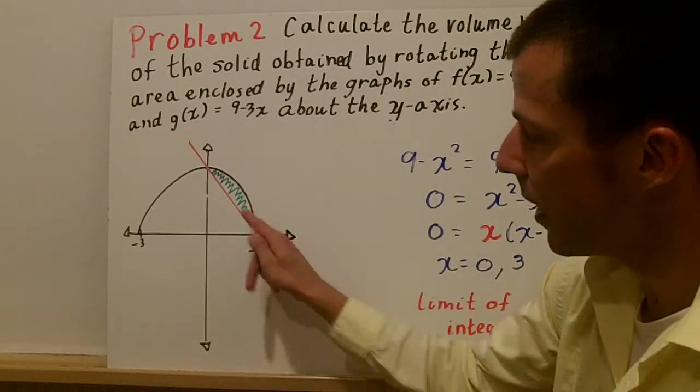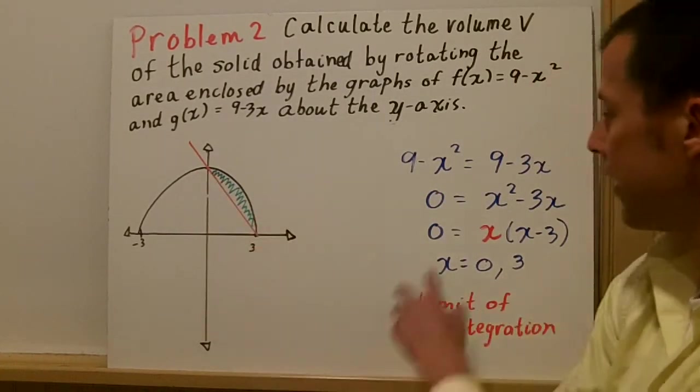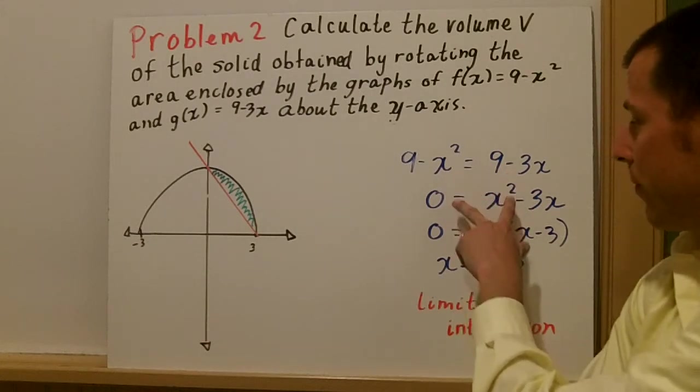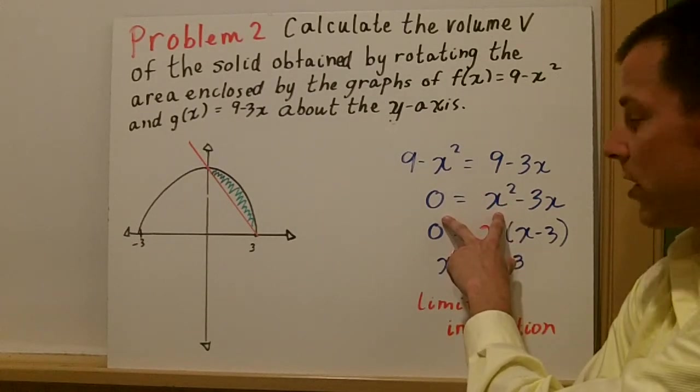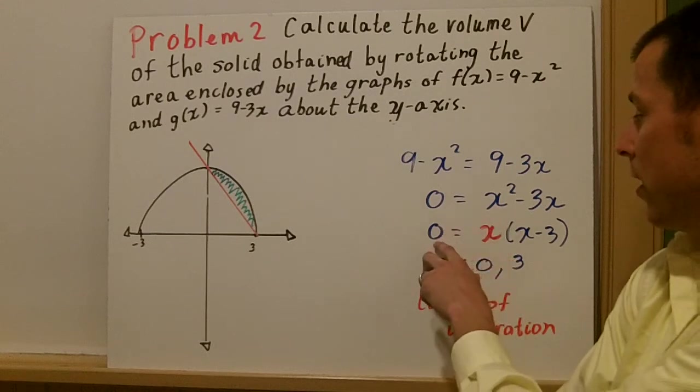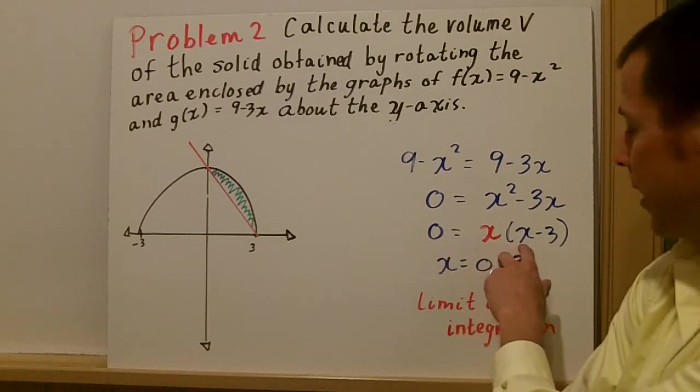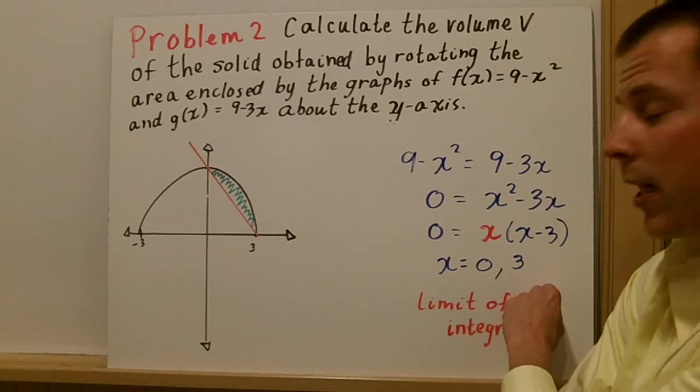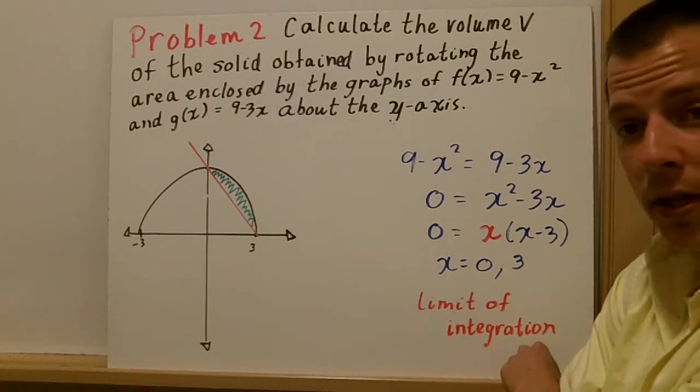The other way you can find the limit of integration is set them equal to one another and really solve for x. We do that, bring every term to one side, and you get x squared minus 3x, and you have 0 equals x times x minus 3, and 0 comma 3, and that's our limit of integration.